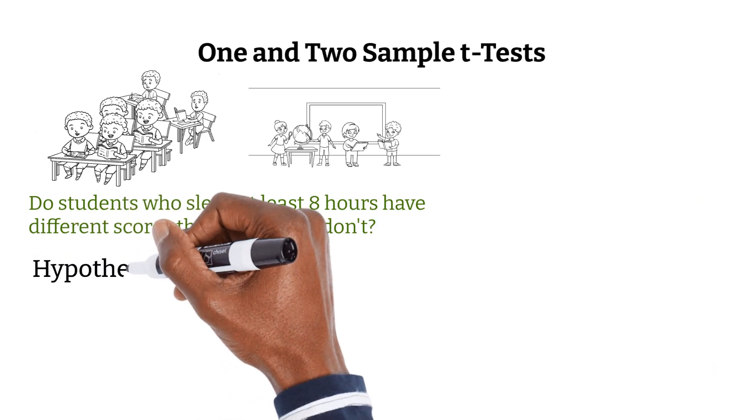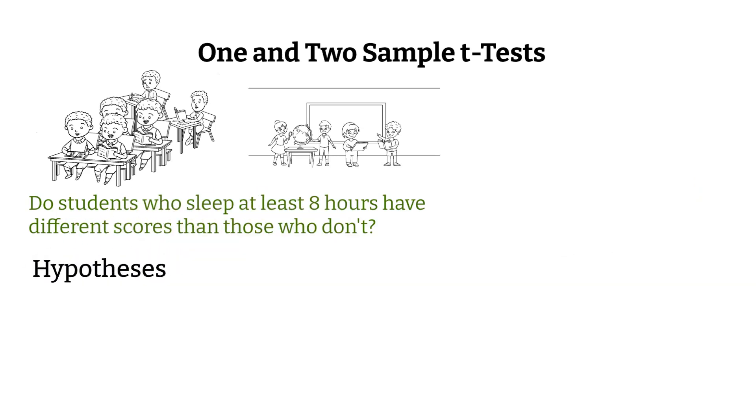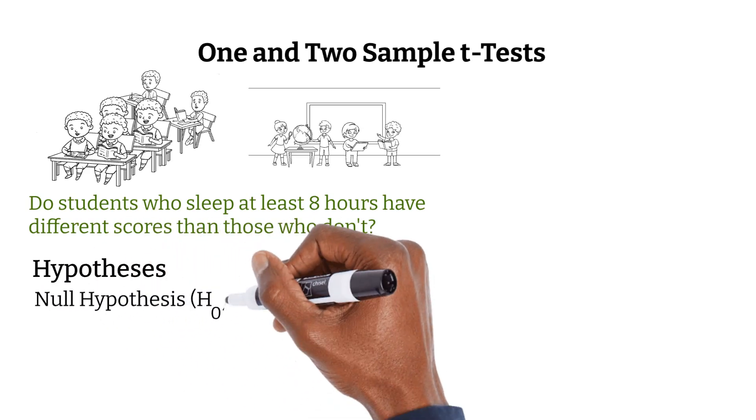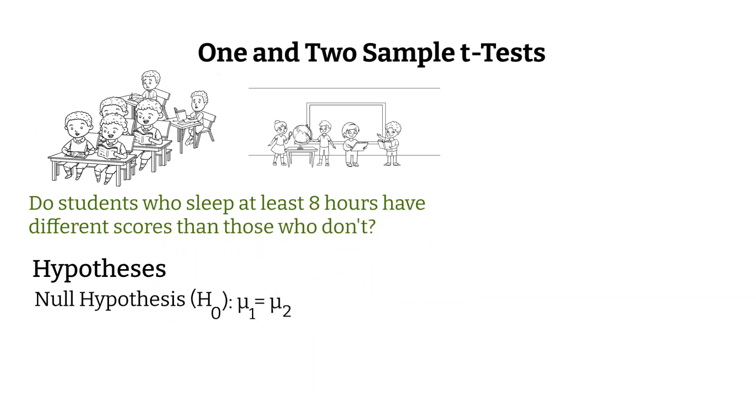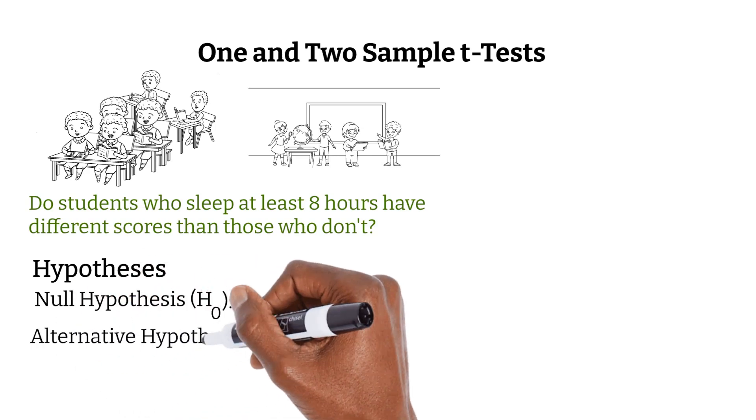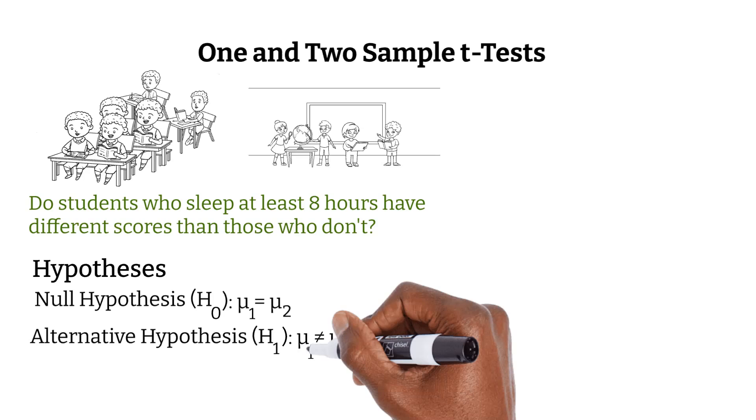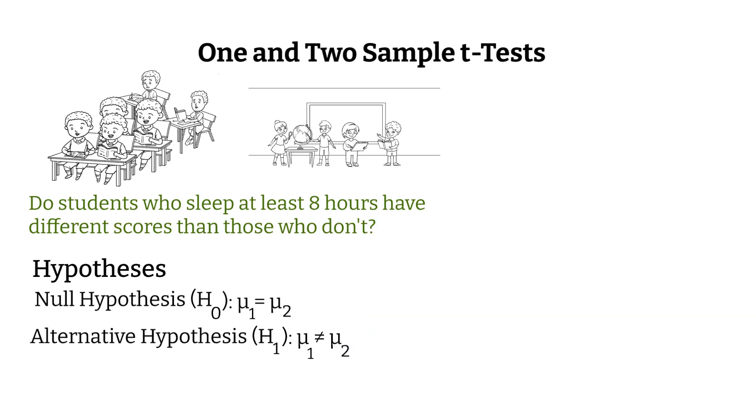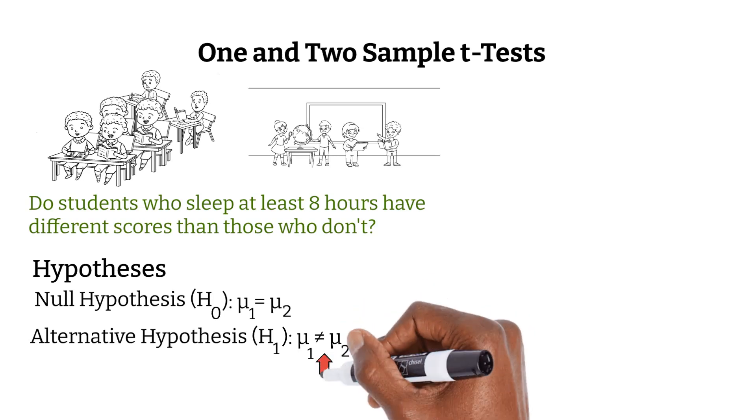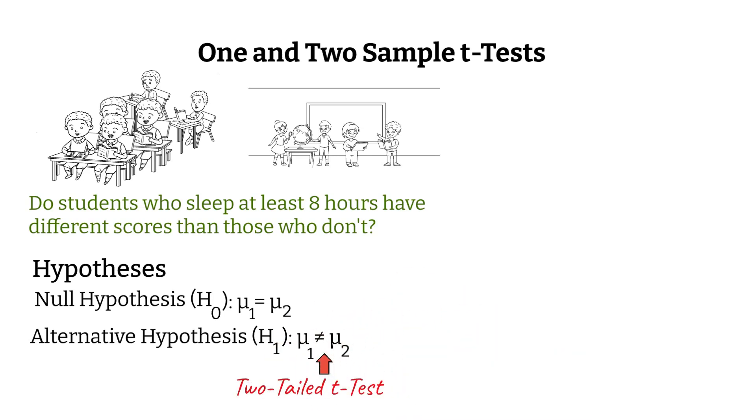In this case, the null hypothesis, H0, says that one mean is equal to the other. That means there's no difference in the means. The alternative hypothesis states that one mean is not equal to the other. The group means are different. This is a two-tailed test because we're open to either group having the higher mean. We're just checking to see if there's a difference in any direction.